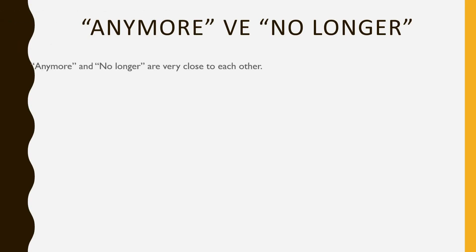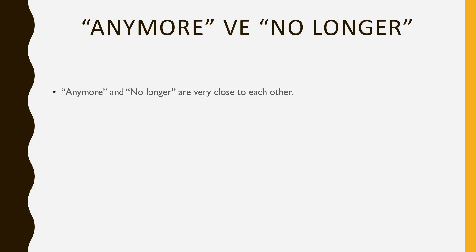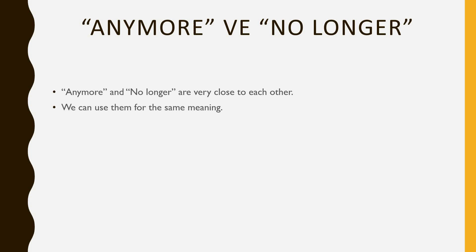Anymore and no longer. These two words are actually very close to each other in the English language and they have the same meaning. This implies that they could be used in the same sentence — not at the same time, but they could be used in the same sentence. Akadashlar, bu iki kelime birbirine yakın olan kelimelerdir ve aynı anlama gelen kelimelerdir.